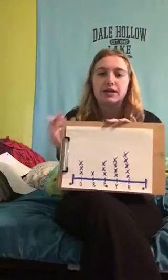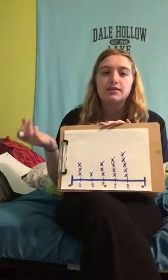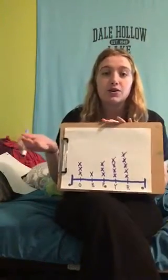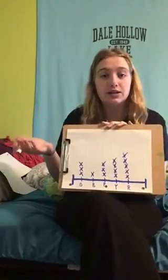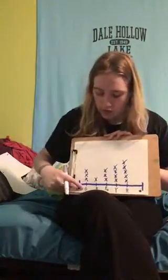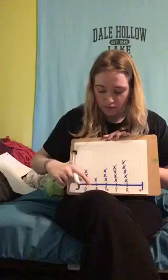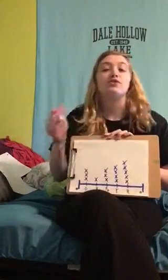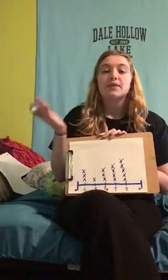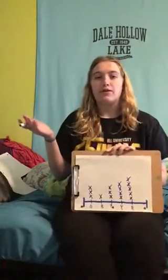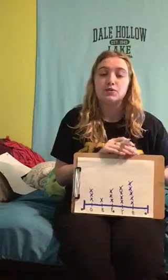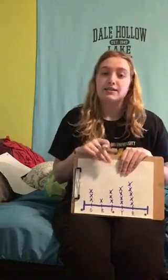Now we're gonna talk about reading and interpreting our line plots. I have a new one here that I labeled — I had gone around and found things that were different colors in my house. My O stood for orange, my B stood for blue, my P stood for pink, my Y stood for yellow, and my R stood for red. We are gonna learn how to compare and read our line plots.